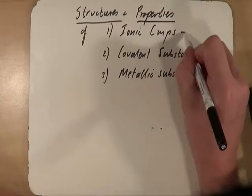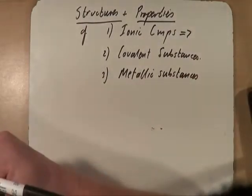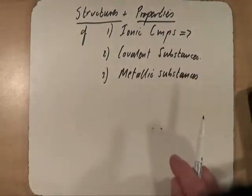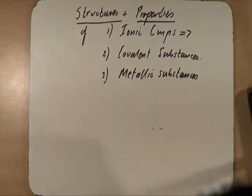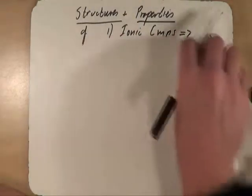In this part of the video we're going to look primarily at ionic compounds, and then we'll look at the other two later on, the covalent and the metallic.